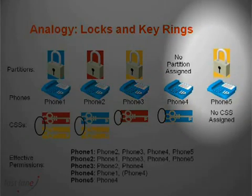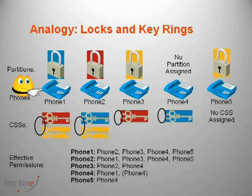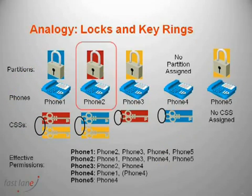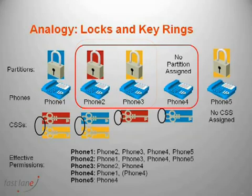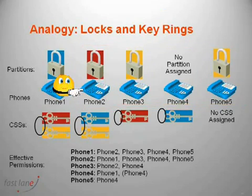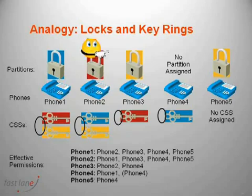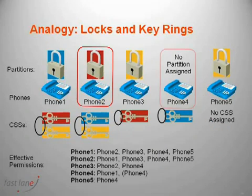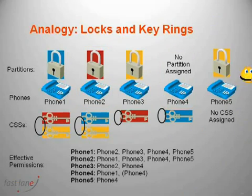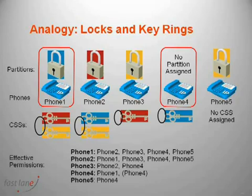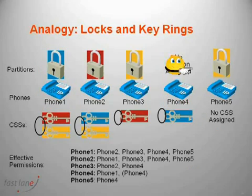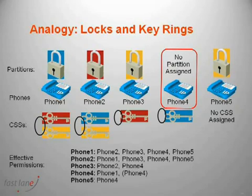Phone 5 has been assigned the yellow partition. Phone 1's calling search space contains the red and yellow keys, so it's allowed to call the directory numbers of phone 2, phone 3, everybody can call phone 4, and phone 5. Phone 2 has been assigned the blue and yellow calling search spaces, which mean it can call phone 1, phone 3, phone 4, and phone 5. Phone 3 has been assigned the red calling search space, which means it can call phone 2 and phone 4. Phone 4 has been assigned the blue calling search space, which means it can call phone 1 and phone 4. Lastly, phone 5 has been assigned no calling search space, which means it can only call phone 4 because it's in the null partition. In other words, if you have no calling search space, you only have rights to call numbers in the null partition.